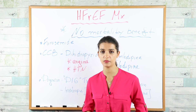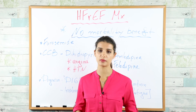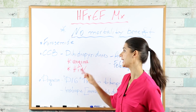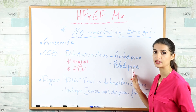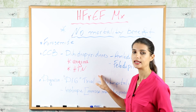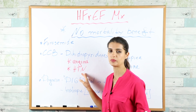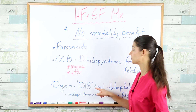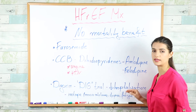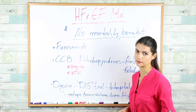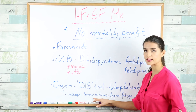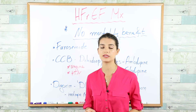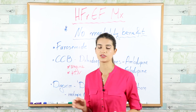Drugs for symptomatic treatment in HFrEF include furosemide (discussed earlier), and calcium channel blockers — only dihydropyridines, specifically amlodipine and felodipine, are safe in HFrEF, used to control angina and hypertension not controlled by ACE/ARB/ARNI/beta blockers. Digoxin, per the DIG trial, decreases hospitalization but does not decrease mortality; it's used as an inotrope to control exercise intolerance, fatigue, and dyspnea. Digoxin has many side effects tested on all three steps.